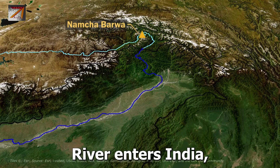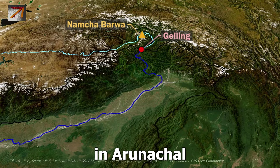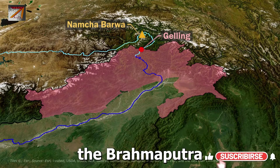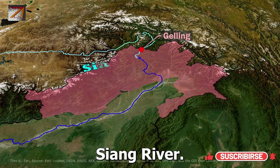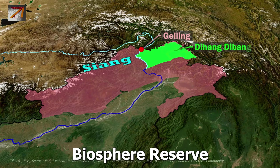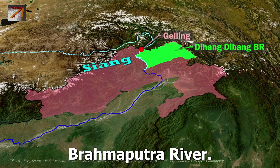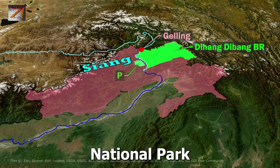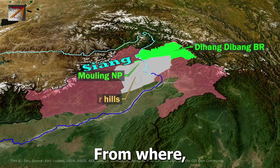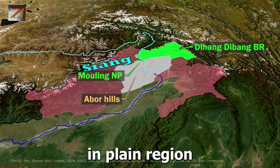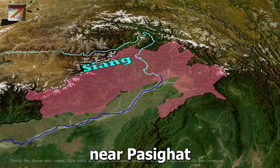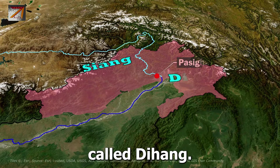The Brahmaputra River enters India near the village of Geling in Arunachal Pradesh. In the hilly region of Arunachal Pradesh, it is called Siang River, and here it passes through Dihang Dibang Biosphere Reserve. To the west of the river is Malling National Park. The river passes through Abhor hills, from where it rapidly descends into the plain region near Pasighat, where it is called Dihang.